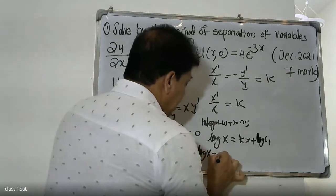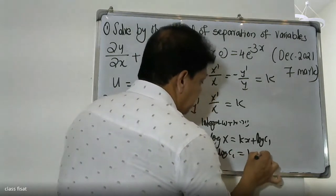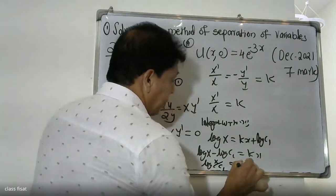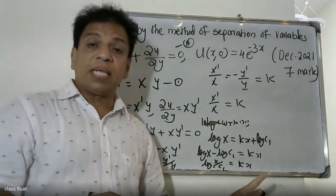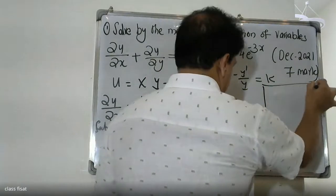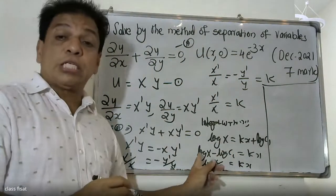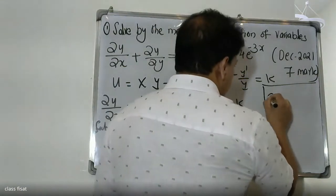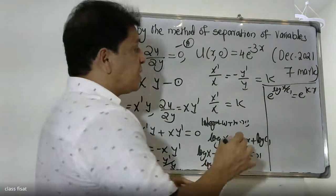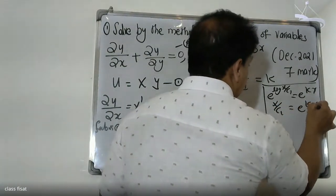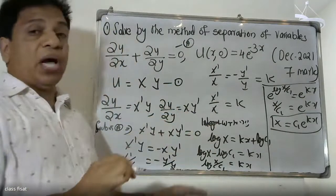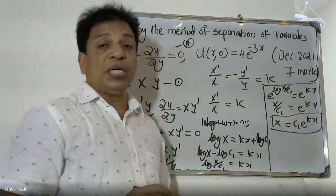So log X − log c1 = kx, which gives log(X/c1) = kx, using log a − log b = log(a/b). Taking the exponential of both sides: X/c1 = e^(kx), therefore X = c1·e^(kx). This is the solution for X.